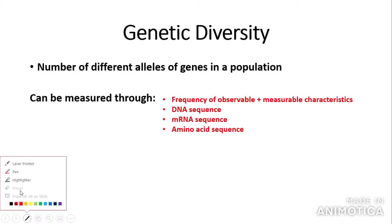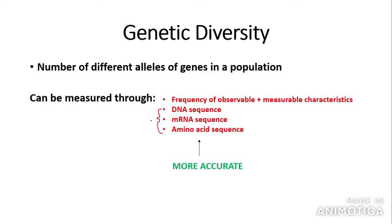DNA sequence, mRNA sequence, and amino acid sequence are used more often nowadays as they are more accurate. If two organisms have a more similar DNA, mRNA, or amino acid sequence, then they are more closely related. It is also important to know that mRNA and amino acid sequence is likely to be more accurate than DNA, as mRNA and the encoded amino acid sequence do not contain introns — introns are non-coding DNA. I mentioned the role of introns in my protein synthesis video, so go check that out.